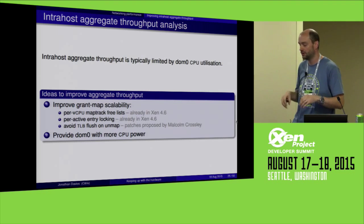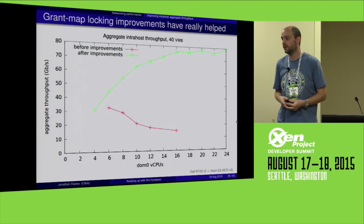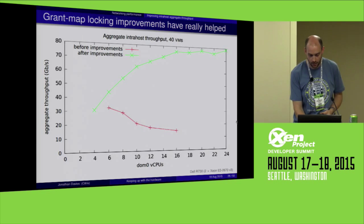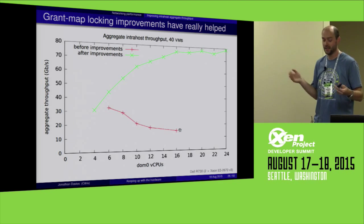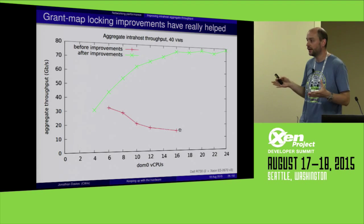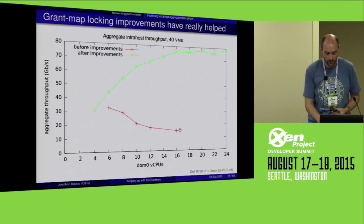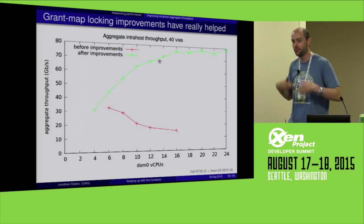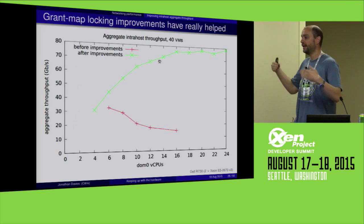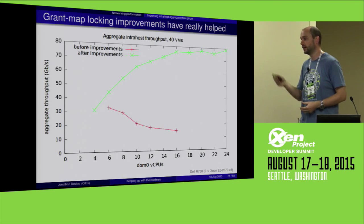How does this work in measurements? Before the improvements — the red line — it was pretty disastrous. Adding more vCPUs to DOM0 caused total throughput to go down by as much as 50%. We were completely stuck. But now, with the green line after these improvements, things scale much better — linearly up to 10 or 15 CPUs. We don't get that drop-off anymore. We can now throw as many vCPUs as needed at DOM0 and it should improve performance, reaching about 80 gigabits per second total.